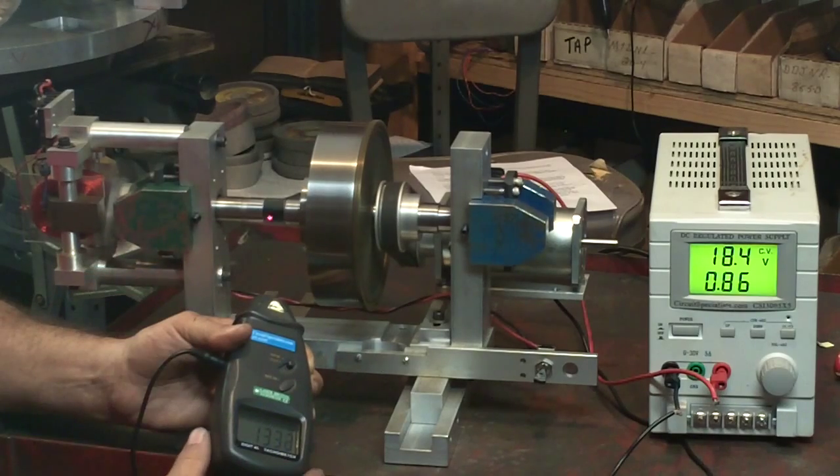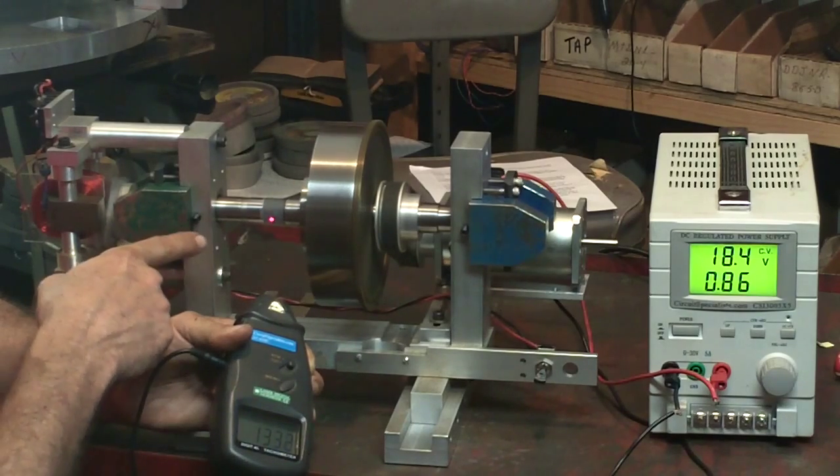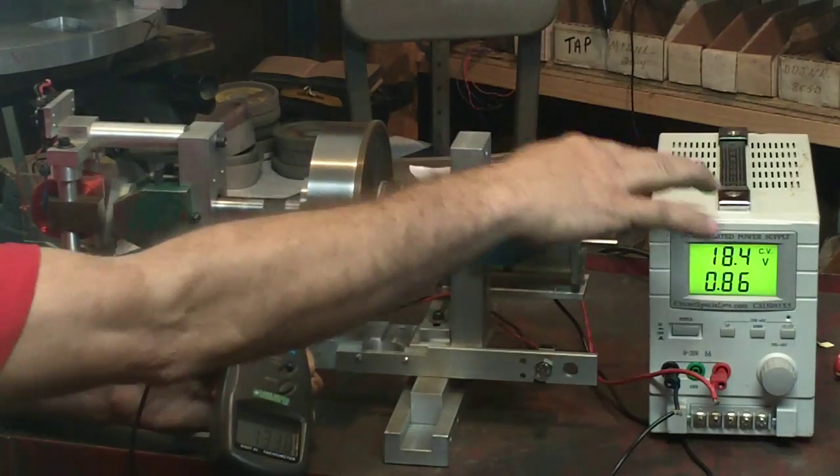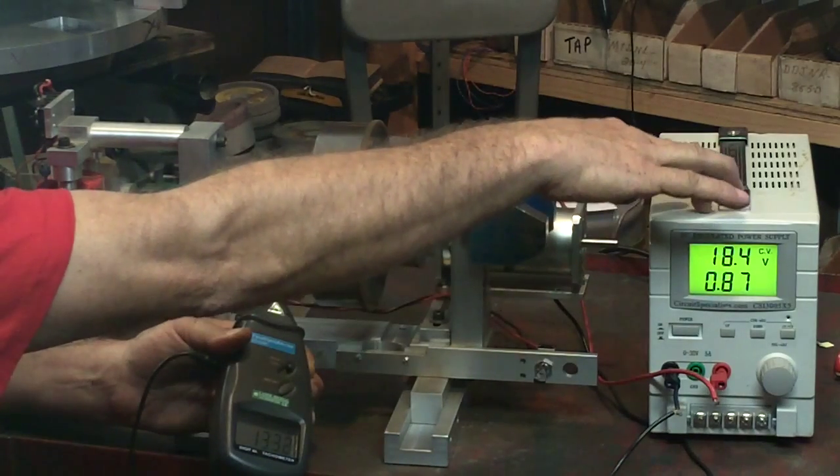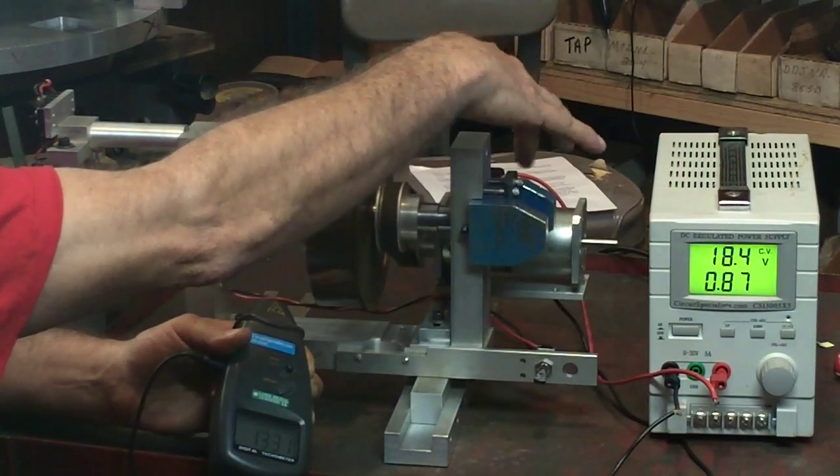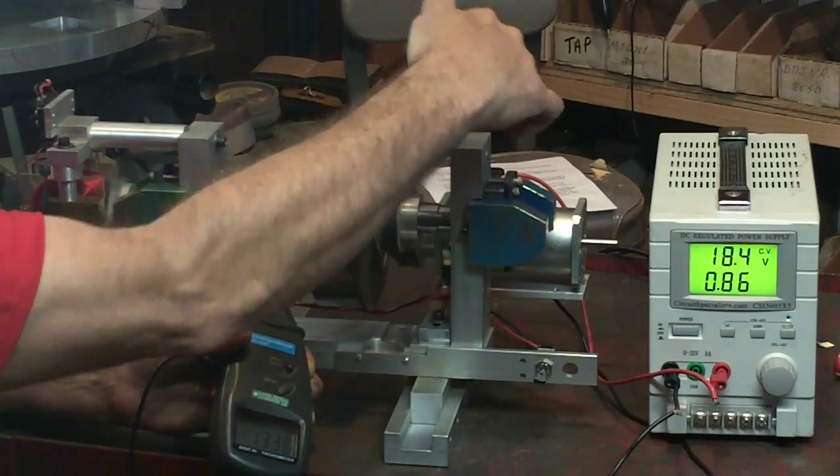At idle speed, I have a tachometer monitoring the speed of the shaft and a DC power supply monitoring the power that's needed to run this device that's connected with a belt.